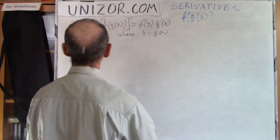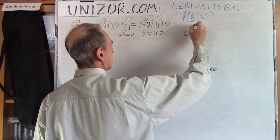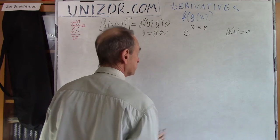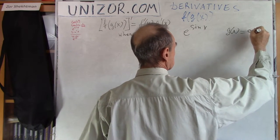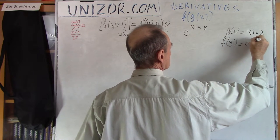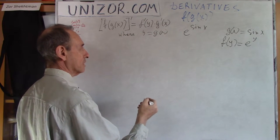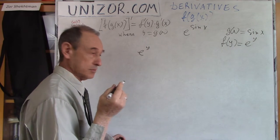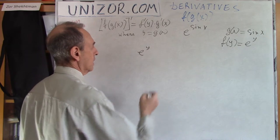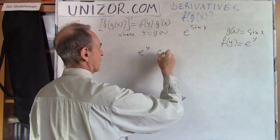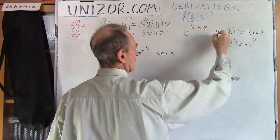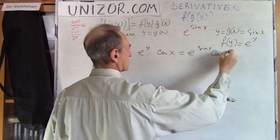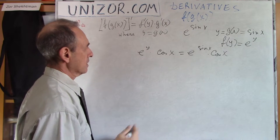Next example: e to the power of sine x. The inner function is sine, and the outer function f of y is equal to e to the power of y. So, my derivative is the derivative of the outer function, which is e to the power of y — and the derivative of e to the power of y with respect to y is e to the power of y. My inner function derivative is cosine x, and y is g of x, so the result is e to the power of sine x times cosine x. That's the derivative.